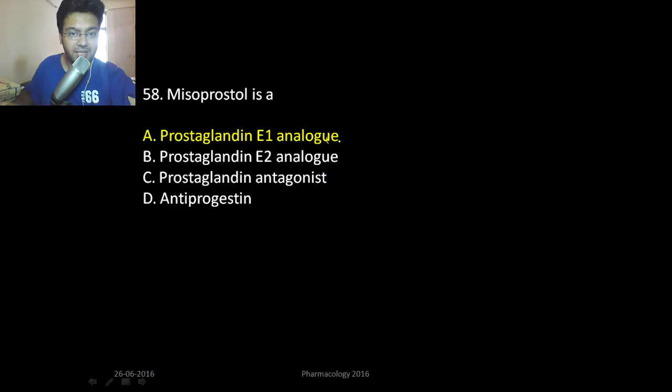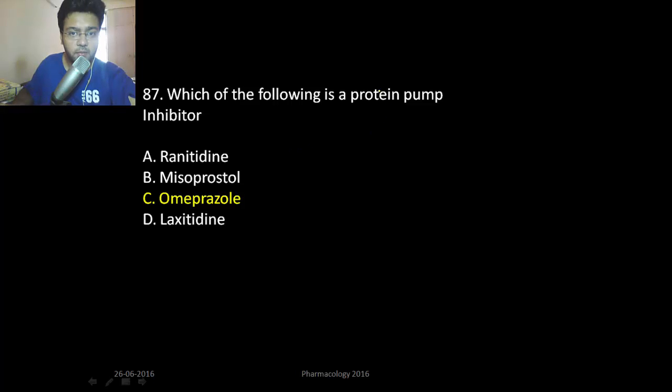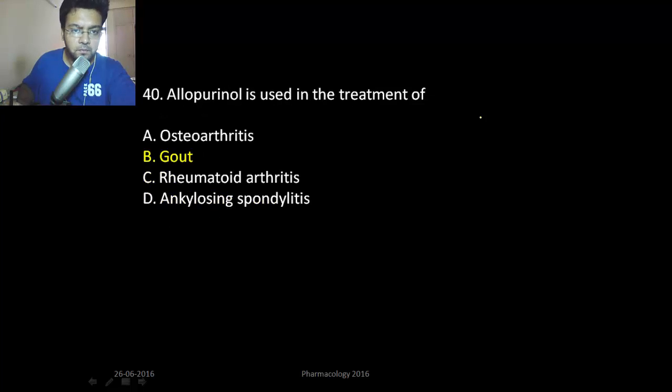Mesoprostol is prostaglandin E1 analog. Which of the following is useful in NSAID-induced ulcer? PGE1 agonist like mesoprostol. Which of the following is proton pump inhibitor? That is omeprazole, rabeprazole, etc. A very basic question.